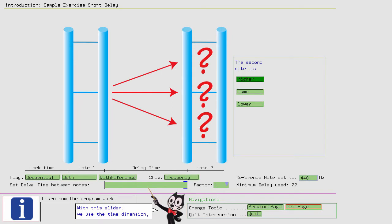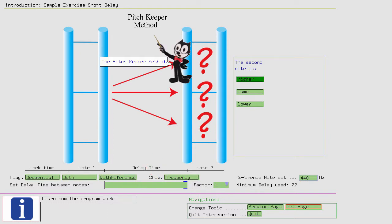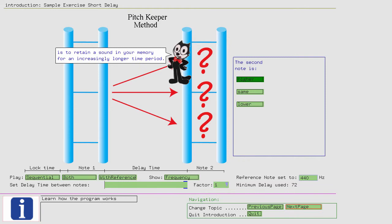With this slider, we use the time dimension, for which we have developed the pitch keeper method. The skill you learn with the pitch keeper method is to retain a sound in your memory for an increasingly longer time period. Therefore, this method goes the other way around than for pitch deviation detection. Instead of making the time delay shorter, the method increases it.